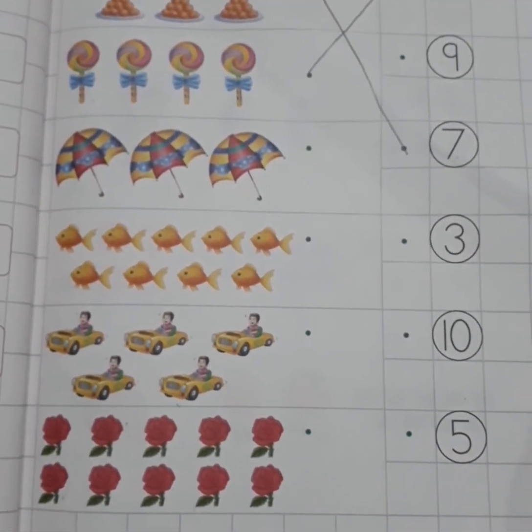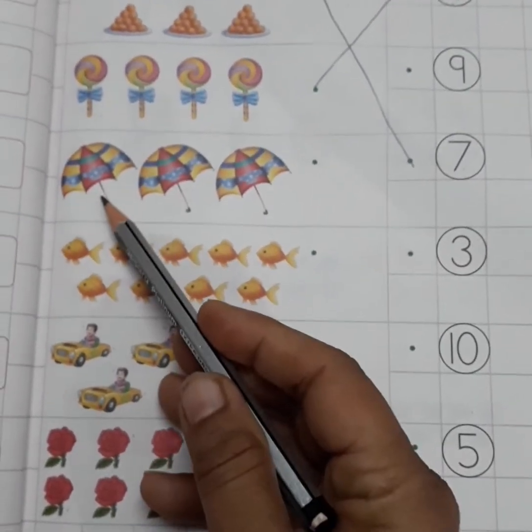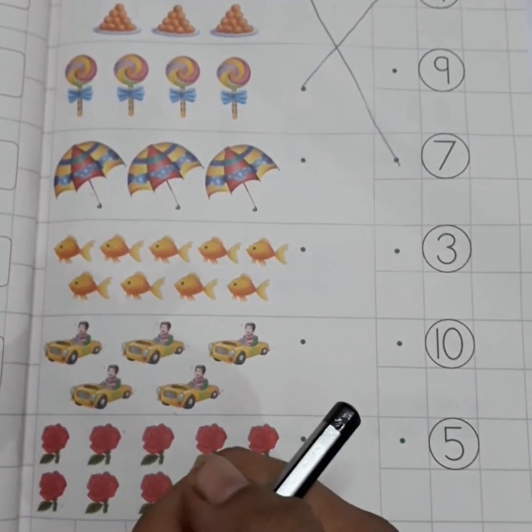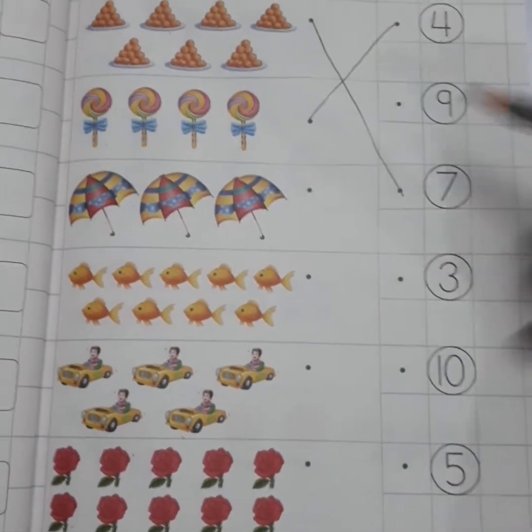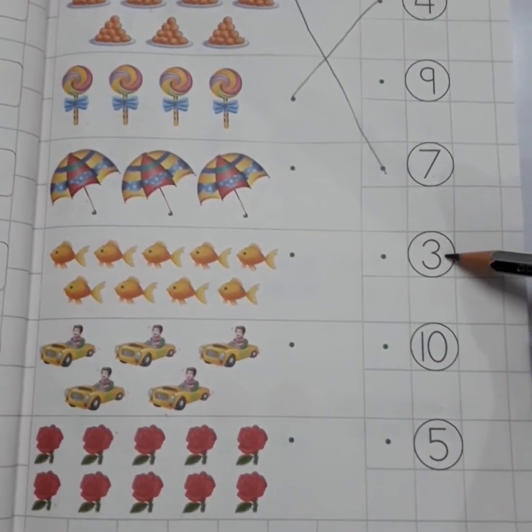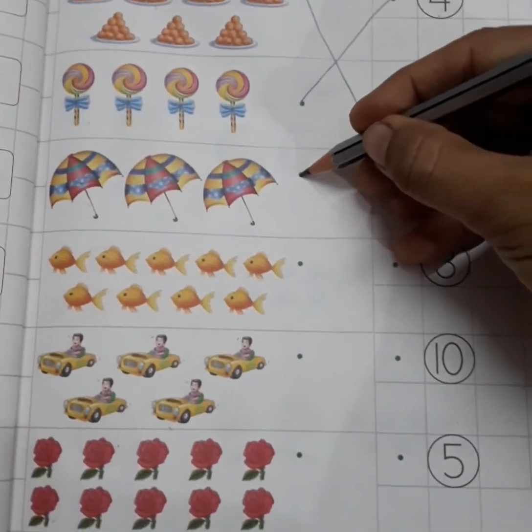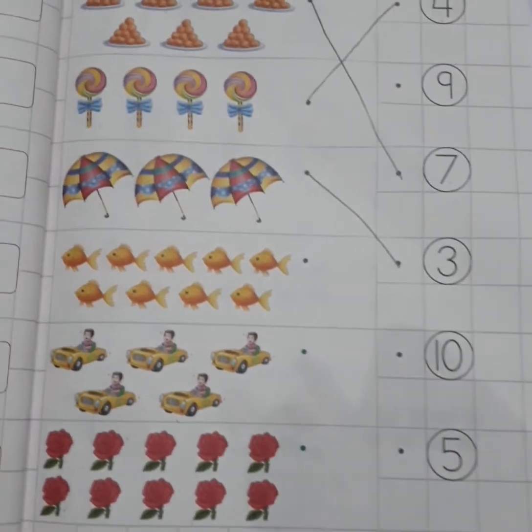Now, you will count. How many umbrellas are there? One, two, three. Now, you will match with number three. Where is number three? Yes, this is number three. Now, you will match with number three. Okay kids.